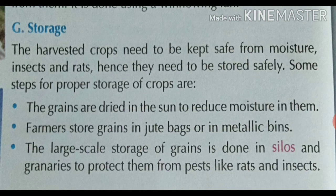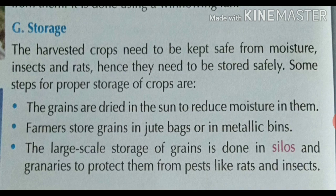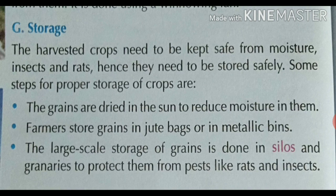Farmers store grains in jute bags or in metallic bins. The large-scale storage of grains is done in silos and granaries to protect them from pests like rats and insects. Silos and granaries are large storage metallic cylinders. Grains are stored in silos and granaries for large-scale storage, and by doing this grains are protected from pests like rats and insects.